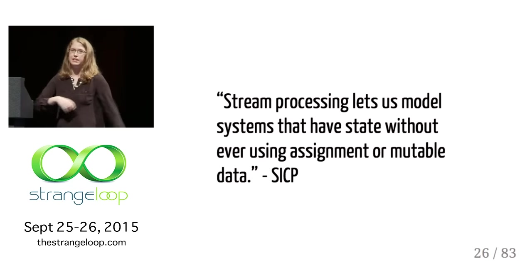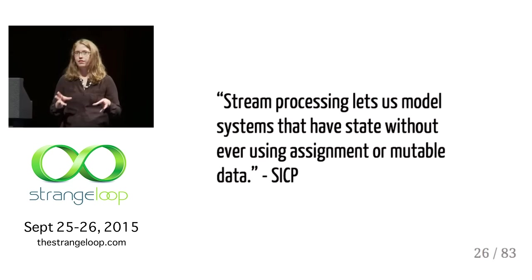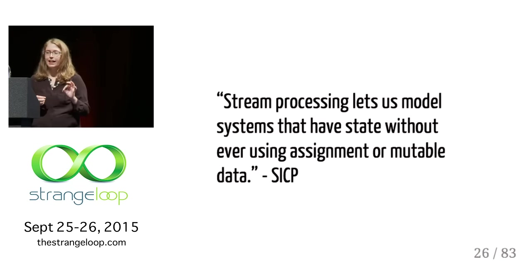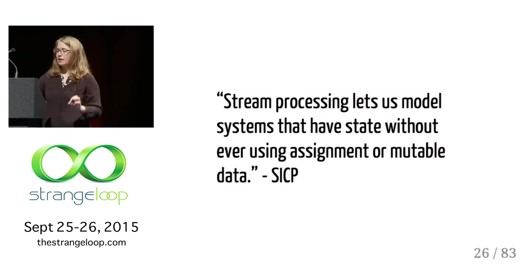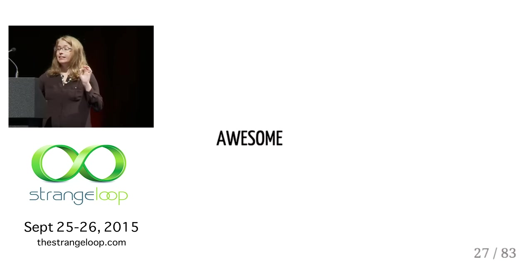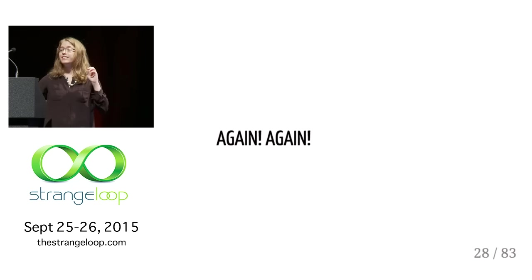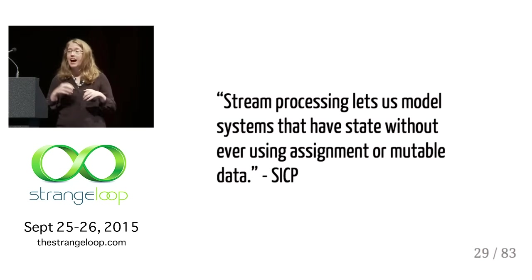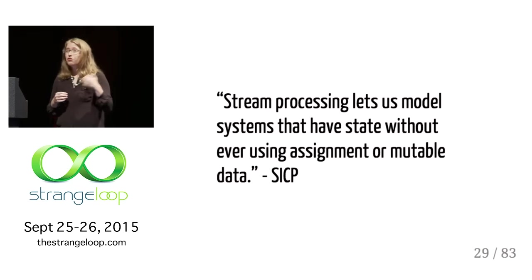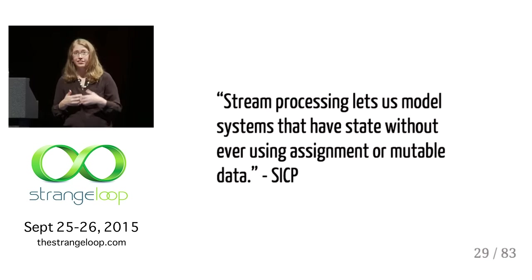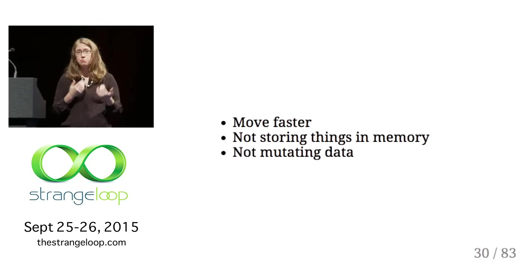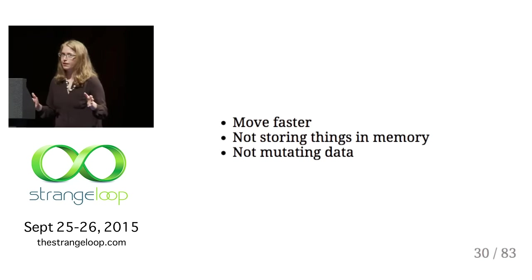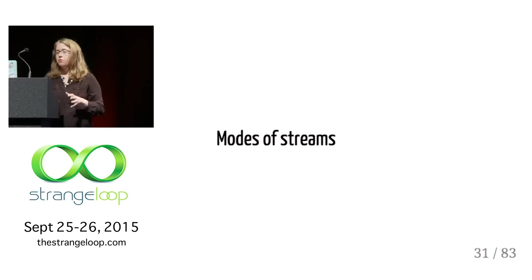Why I brought up SICP — I really like this quote: 'Stream processing lets us model systems that have state without ever using assignment or mutable data.' That is really awesome. Stream processing lets you have your state, but you don't have to use assignment or mutable data — those things that we aren't that into. So you can move faster. You aren't storing things in memory and we aren't mutating data — a very popular topic at Strange Loop.